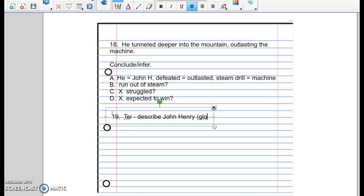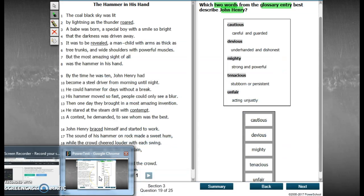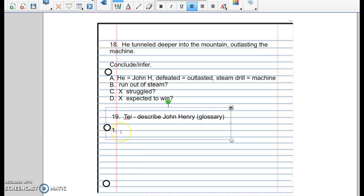It is a glossary, so you need to find evidence to support your answers. There are five choices, and you can actually write those on your notebook paper very easily, or you can just put 1, 2, 3, 4, 5. Okay, cautious, devious. I'm just going to do 1, 2, 3, 4, 5.